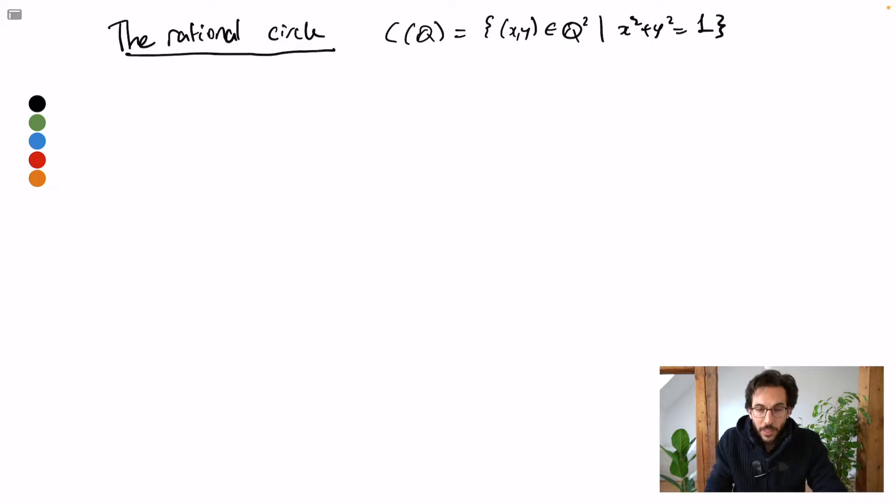This time, this cannot be an unbounded set because it has to lie inside C(R). And our goal now is to describe the set C(Q). And our first guess could be that since the rational numbers are dense in the real numbers, perhaps this C(Q) is dense in C(R). In fact, this guess is correct.